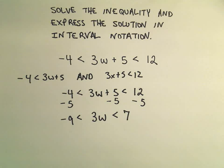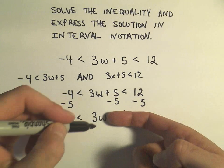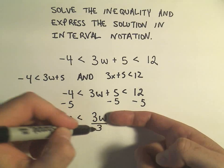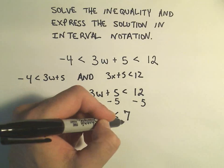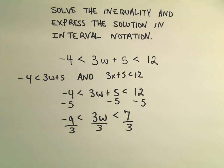And again, the same thing I would do here if only one of the inequalities were there. I would divide everything by 3. And again, that's what I'm going to do everywhere - I'm just going to divide everything by 3.